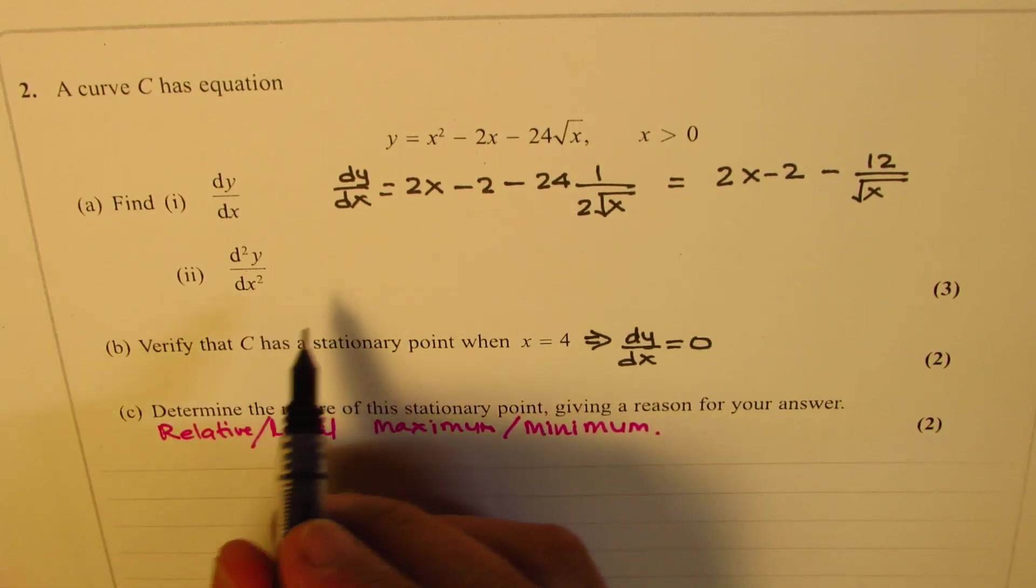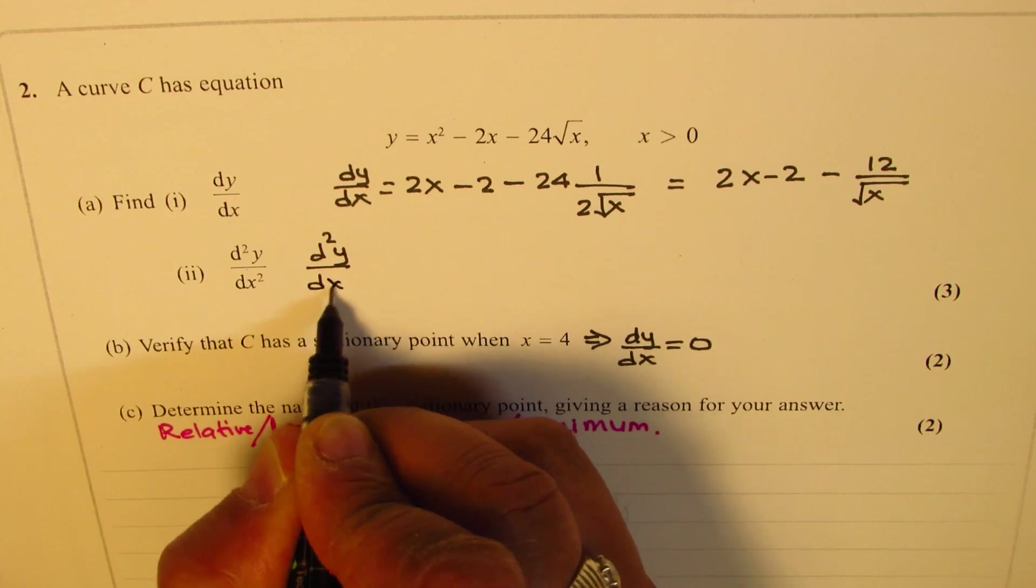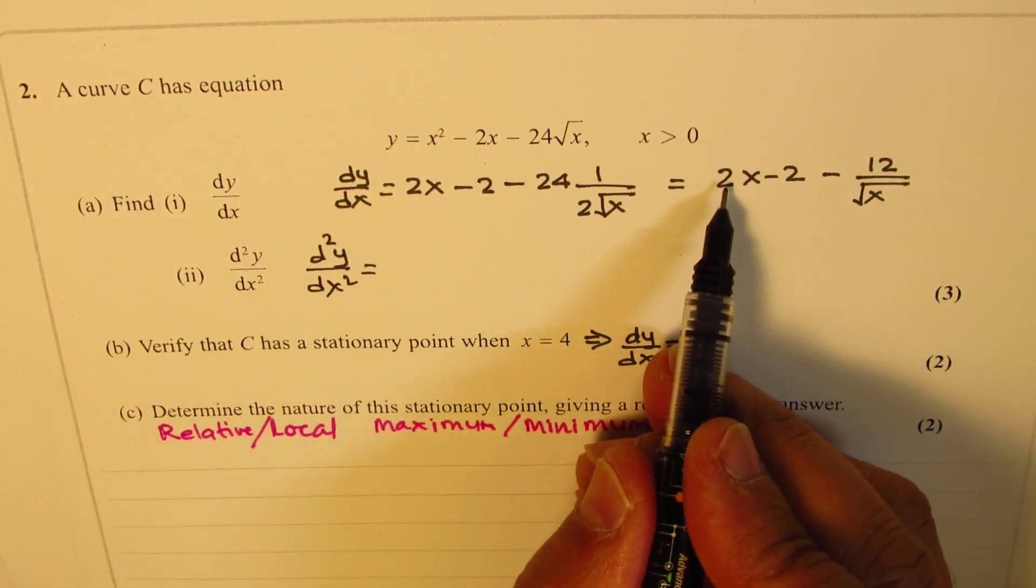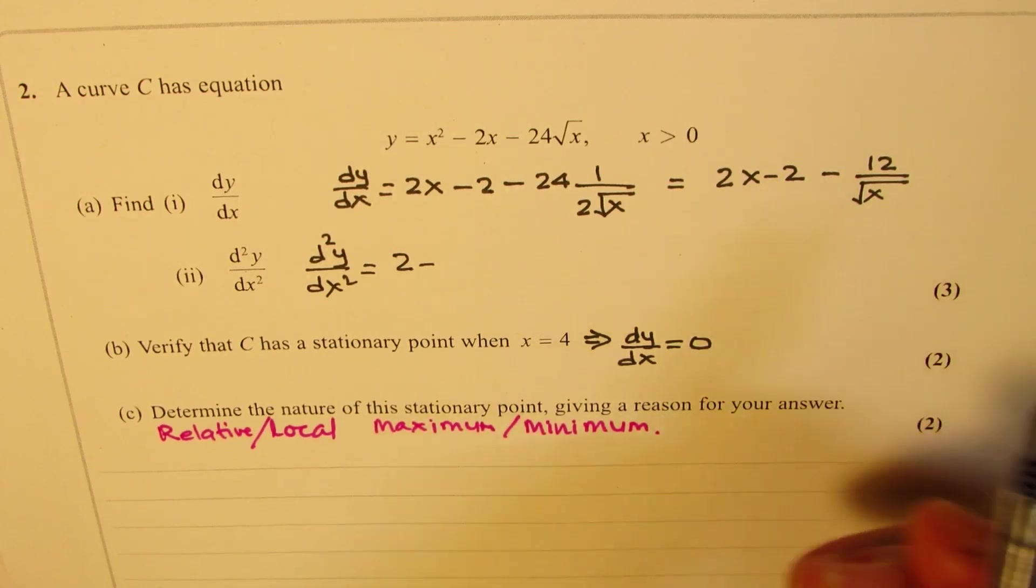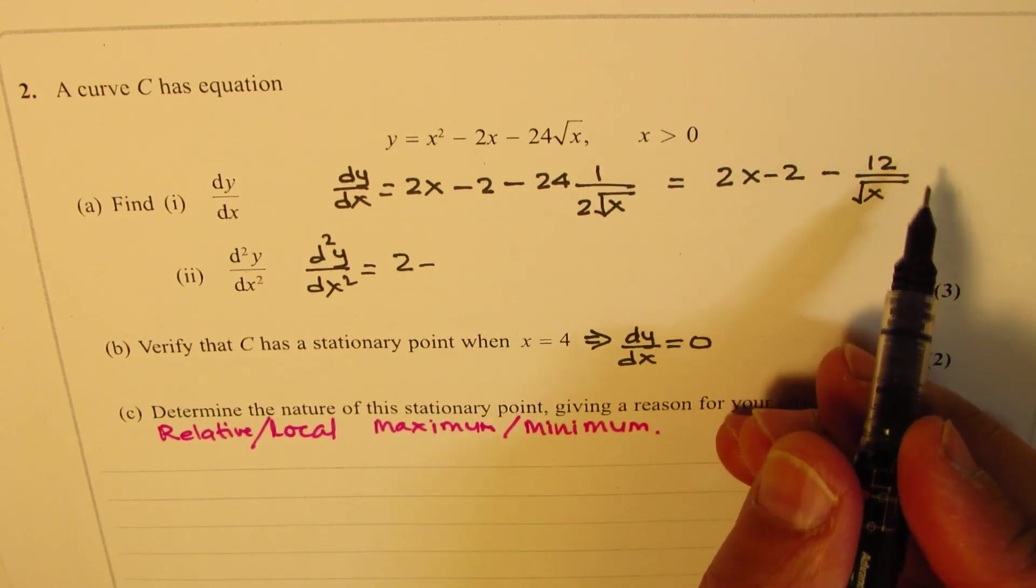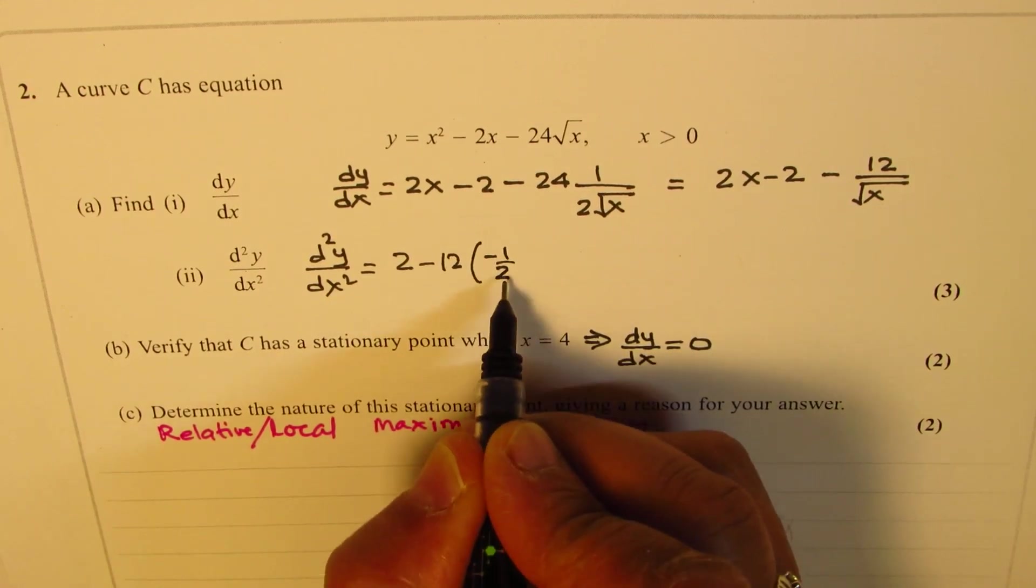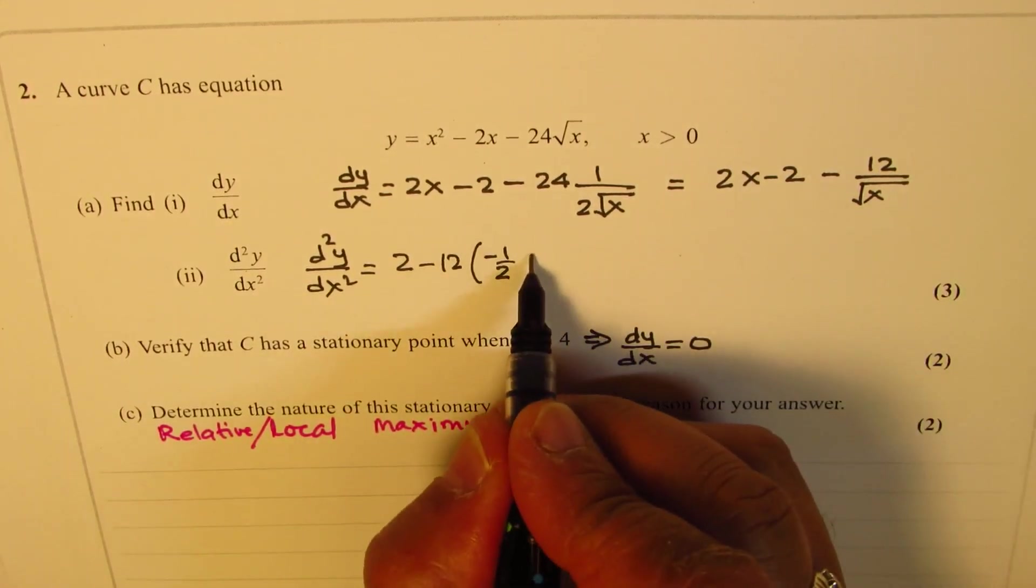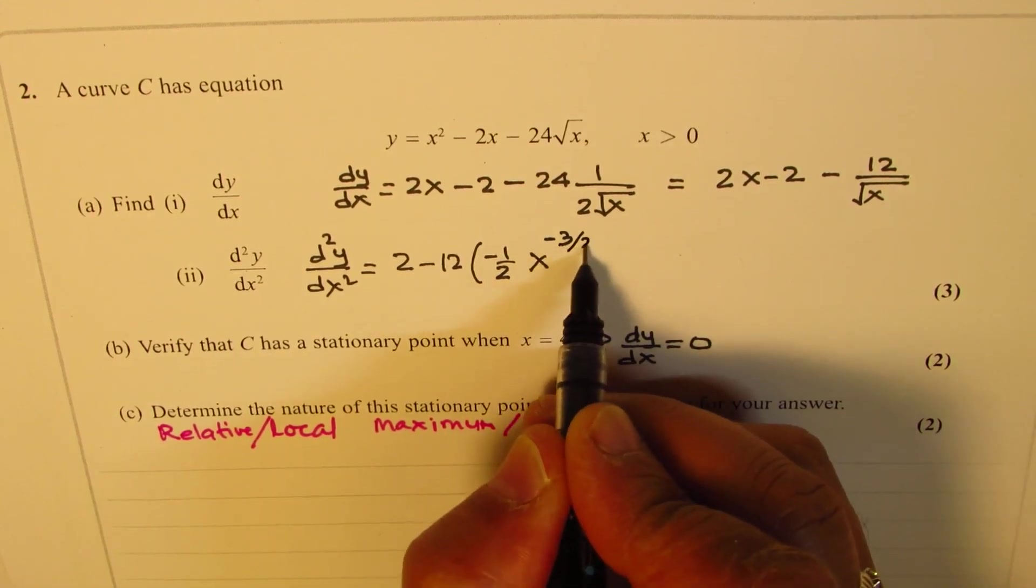Now to get the second derivative, let's use this one. So d²y/dx² basically is equal to: derivative of 2x is 2, derivative of minus 2 is 0. Now derivative of this, this really means x to the power of minus half, so that gives you minus 12 times minus half times x to the power of minus half minus 1, which is minus 3 by 2.